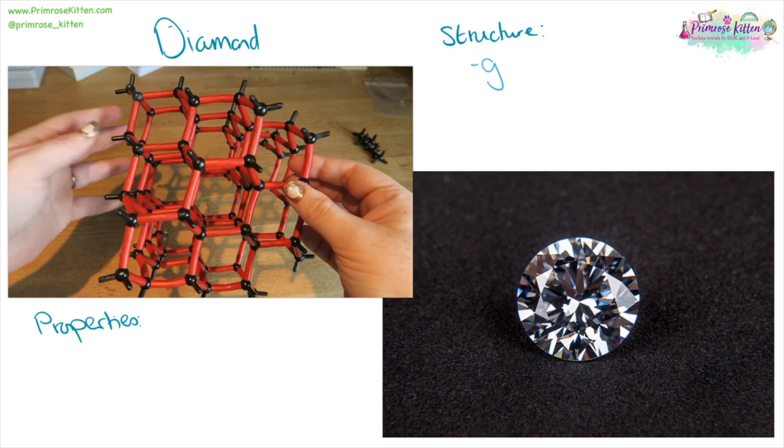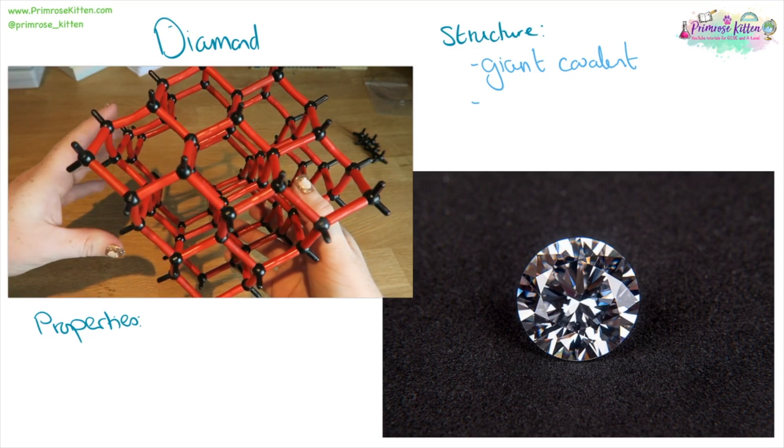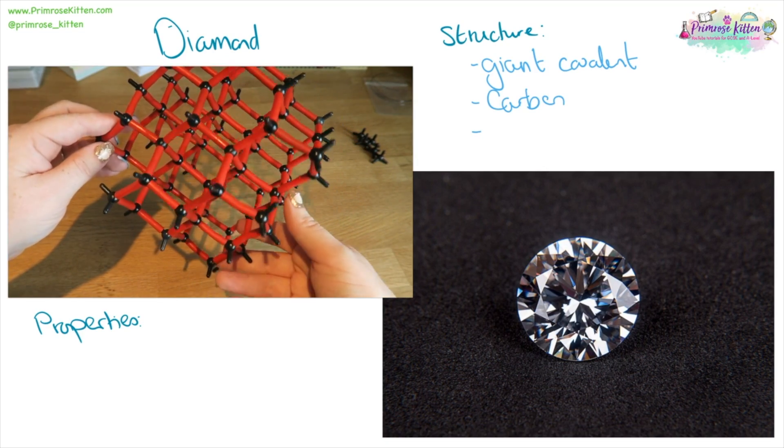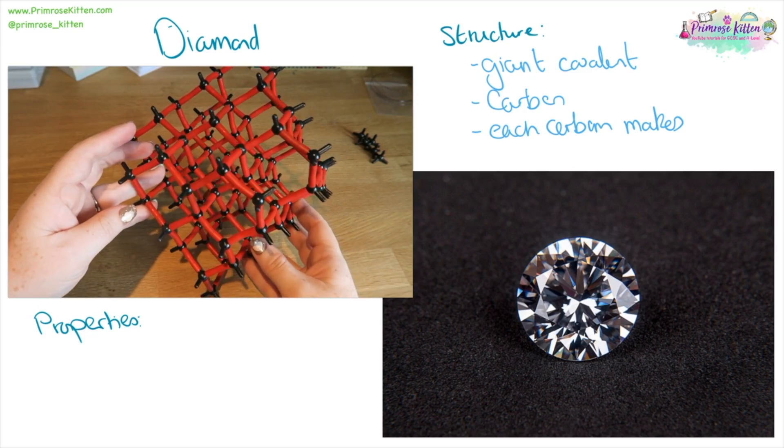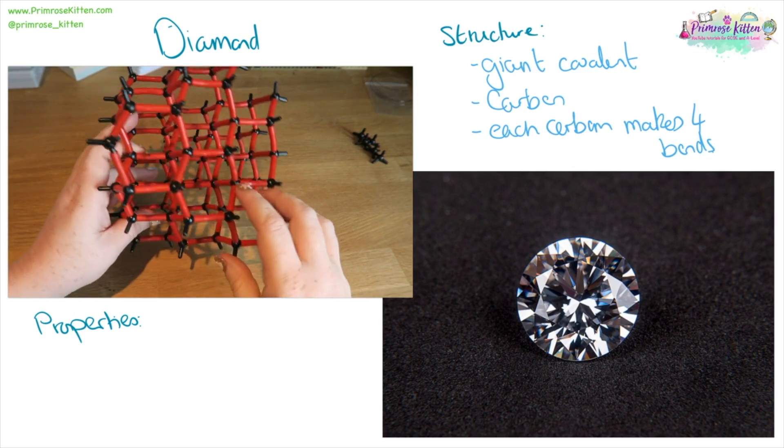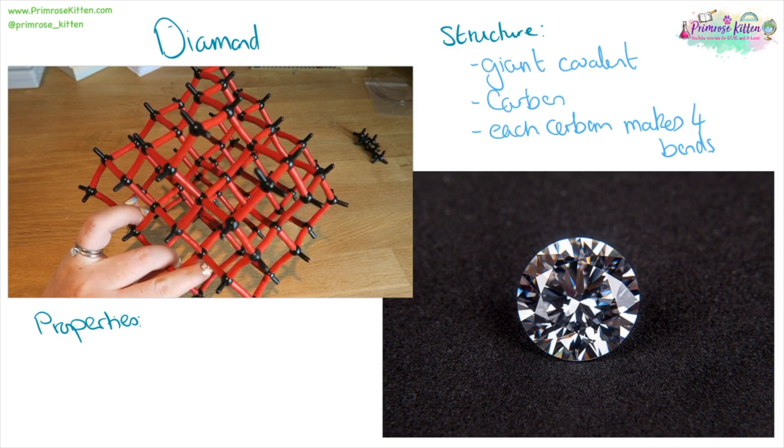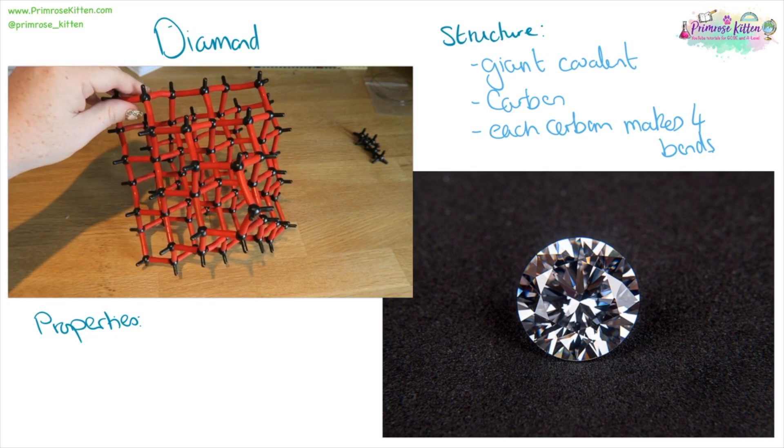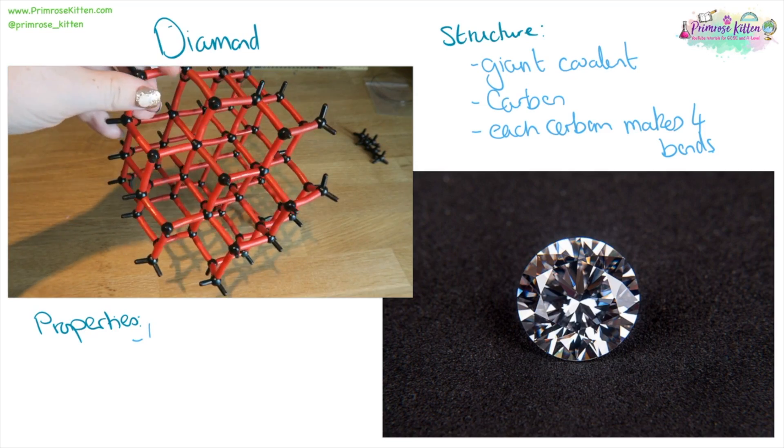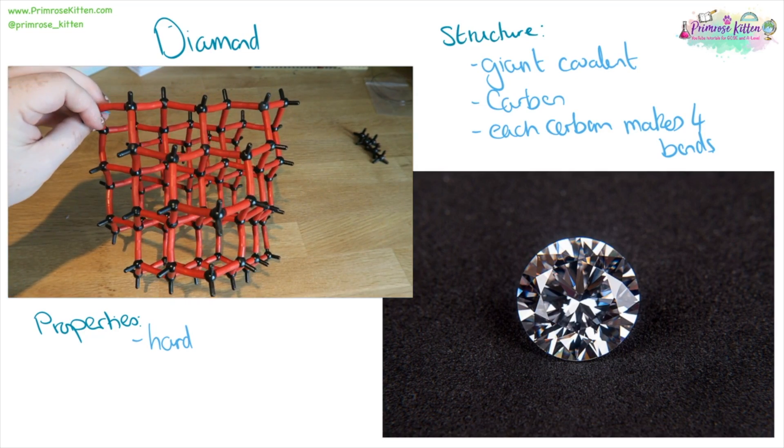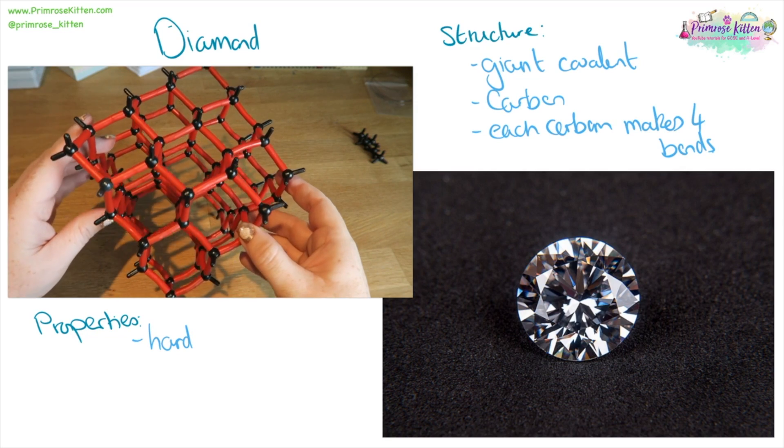Here we have diamond. It is a giant covalent compound, a giant covalent lattice. It is made of carbon, pure carbon, nothing else in there. And each carbon makes four bonds. In the video you can see that the carbon is the black bits. The covalent bonds are the red bits. And each carbon is bonded to four other carbons. The properties of diamond that make it really useful is that it is incredibly hard. It's very rare, it's hard to find. It's also very beautiful, which makes it very precious. But the main thing is that it is incredibly hard. So you can use it in drills.